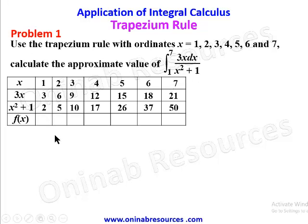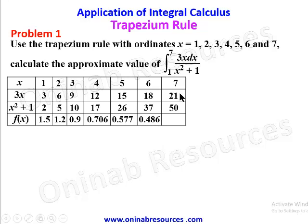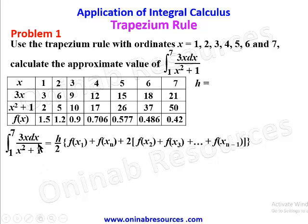Computing f(x) values: 3÷2=1.5, 6÷5=1.2, 9÷10=0.9, 12÷17=0.706, 15÷26=0.577, 18÷37=0.486, and 21÷50=0.42. Now we bring in the formula for evaluation of this integral and need to find h.